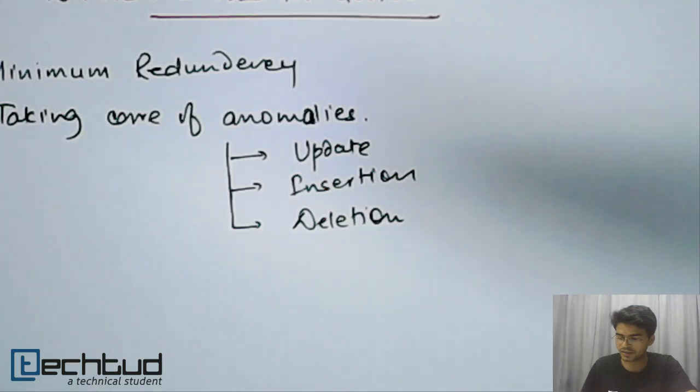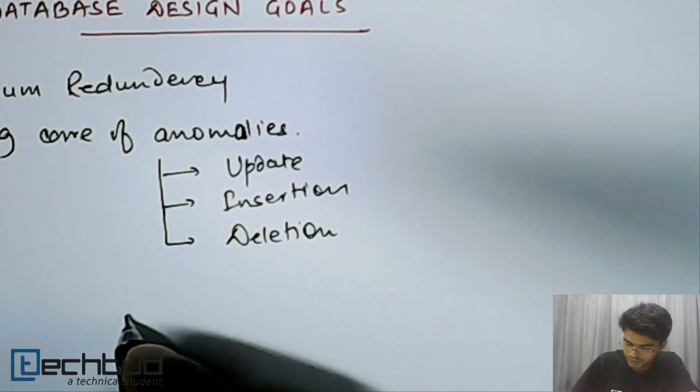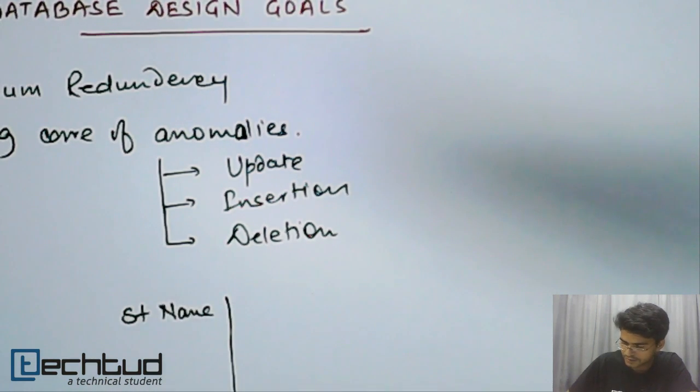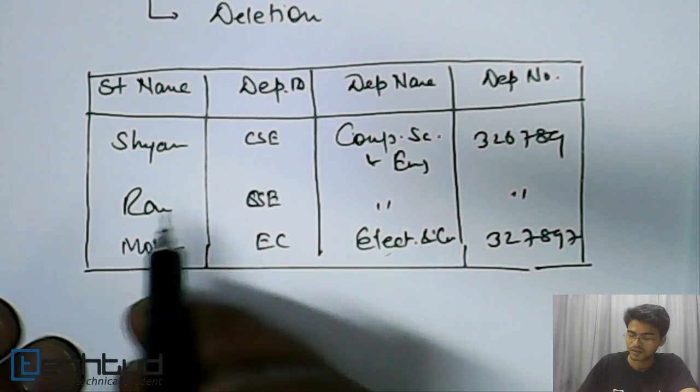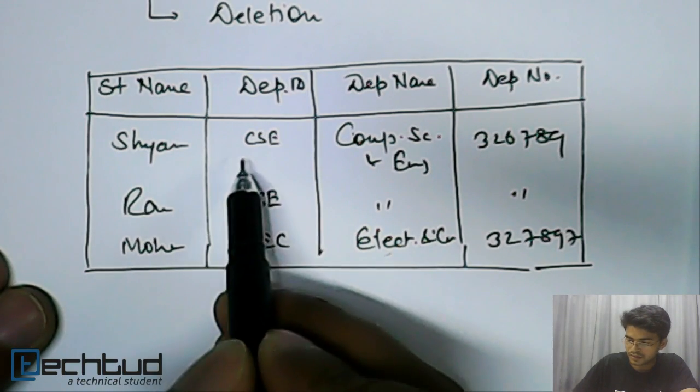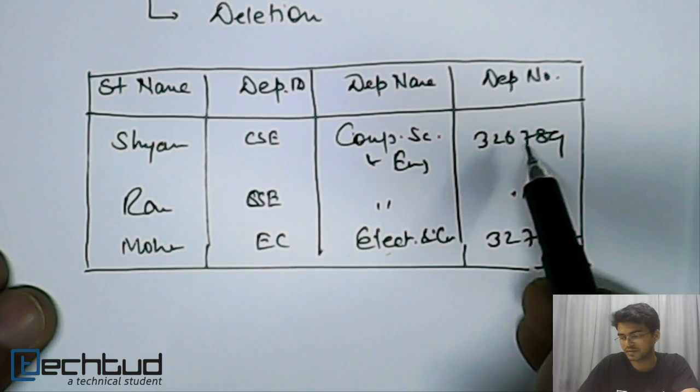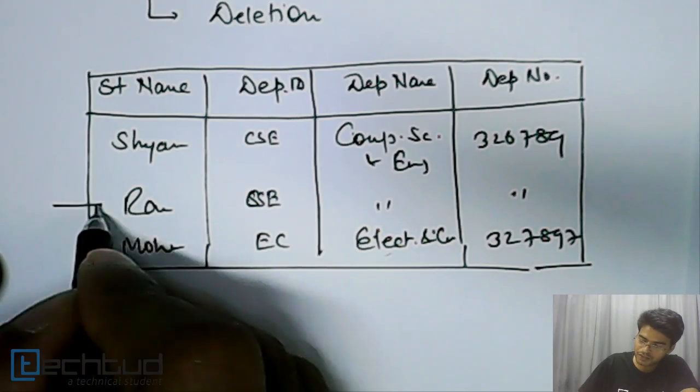What are these three? Let's understand with an example. Let's say I have a student name - I'll just take a random database. We have three students belonging to different departments. Sham belongs to CSE and the department name is Computer Science and department phone number is this. Similarly these are the information here. Two students are belonging to the same department.